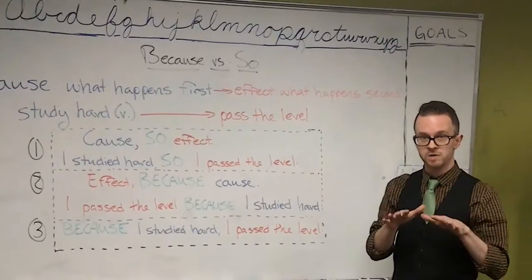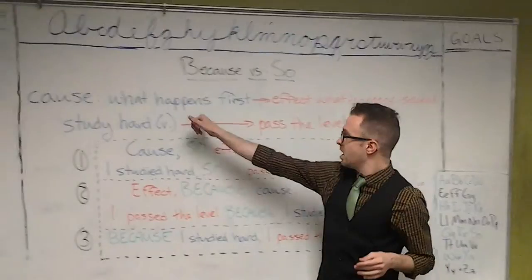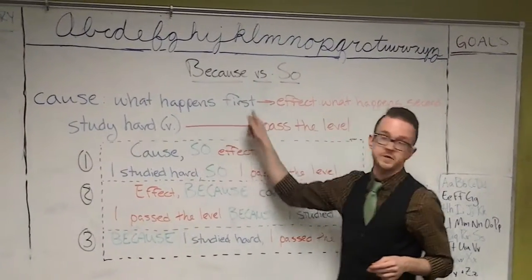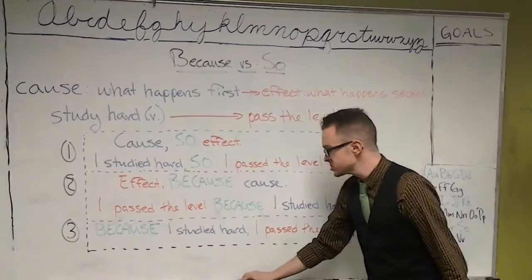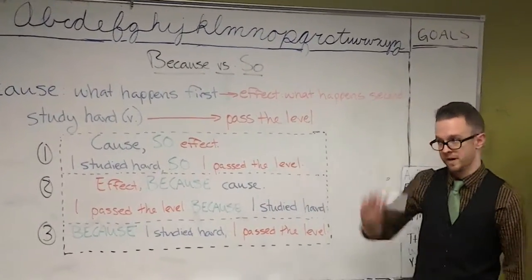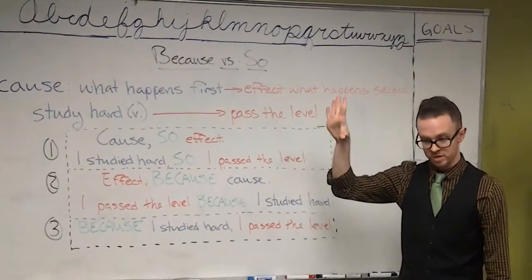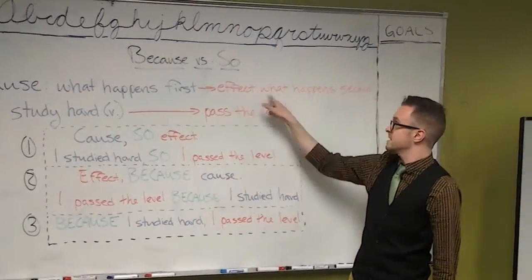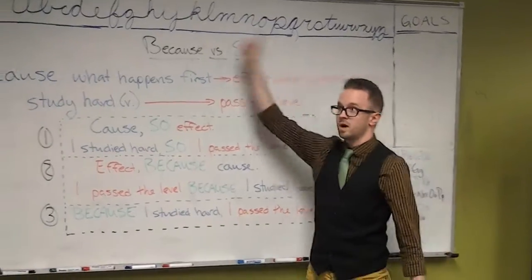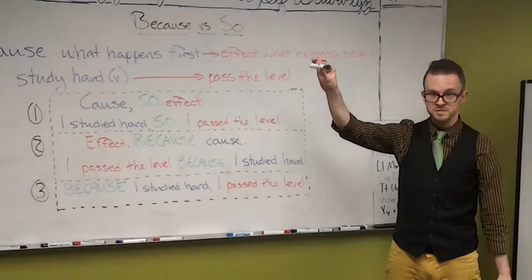Before we begin, I would like to start by talking about what is a cause and what is an effect. A cause means what happens first in any given situation. First we're going to use the example of the marker. The cause is I drop the marker — that is the thing that happens first, it is the cause. The effect is the thing that happens second because of the first thing. So the cause is dropping and the effect is falling.